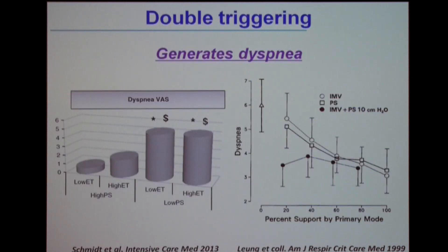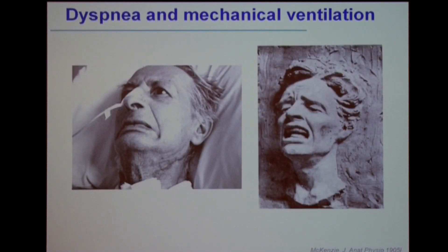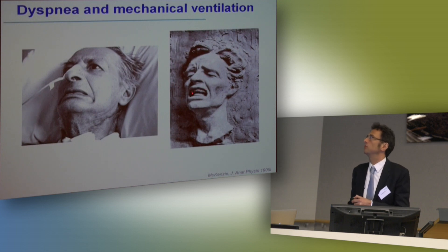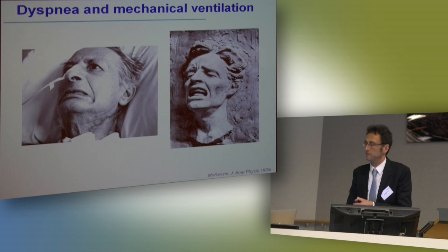The second issue is that double triggering generates dyspnea. Double triggering is generally associated with a too-low level of assistance, and a low level of assistance is associated with a high level of dyspnea. Patients don't like dyspnea — as illustrated by this cast from the beginning of the 20th century of a normal subject experiencing dyspnea — and neither does a patient with a badly set ventilator.